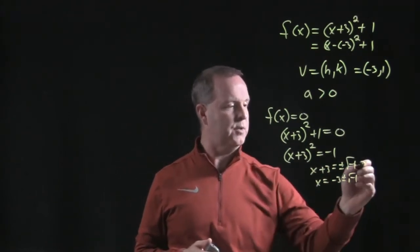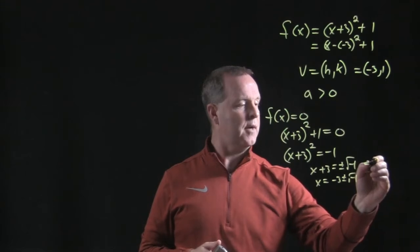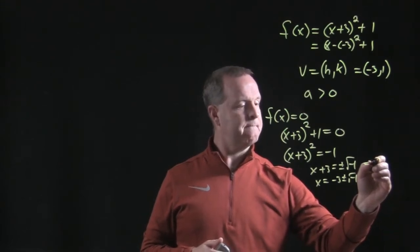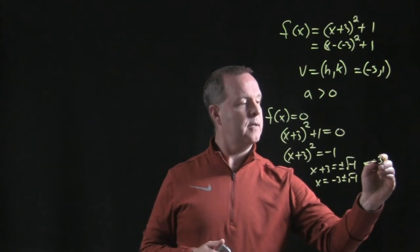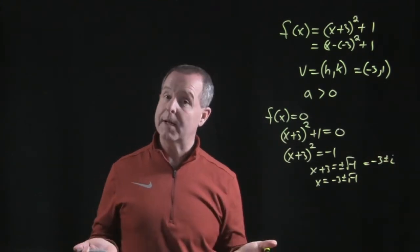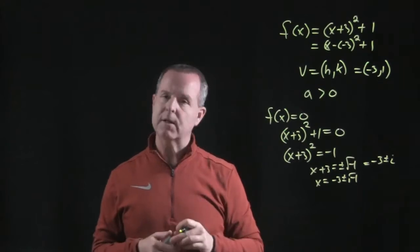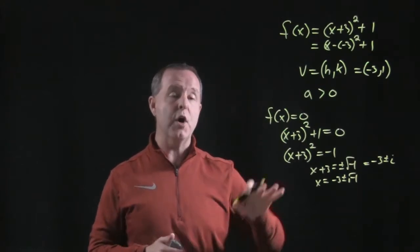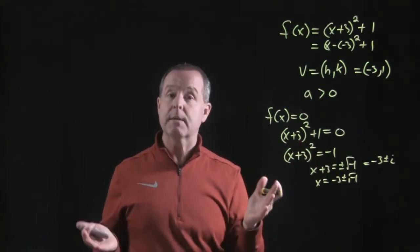And actually, if you want to add those complex roots, we can rewrite it as minus 3 plus or minus i. I have complex roots. That tells me it doesn't cross the x-axis, so there are no x-intercepts. And that's important for us to know.